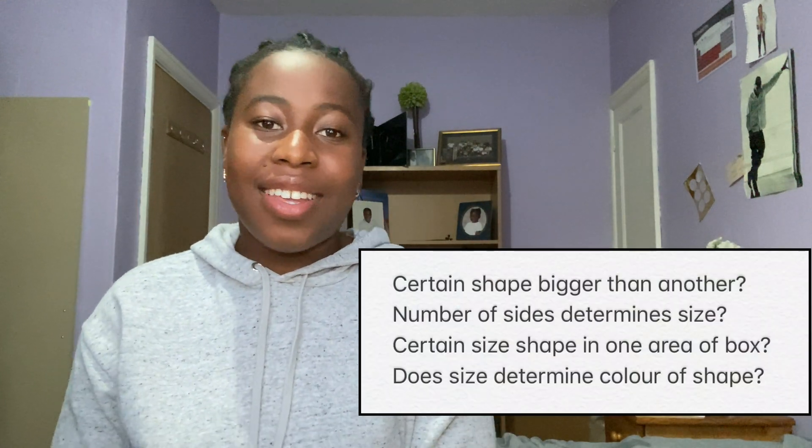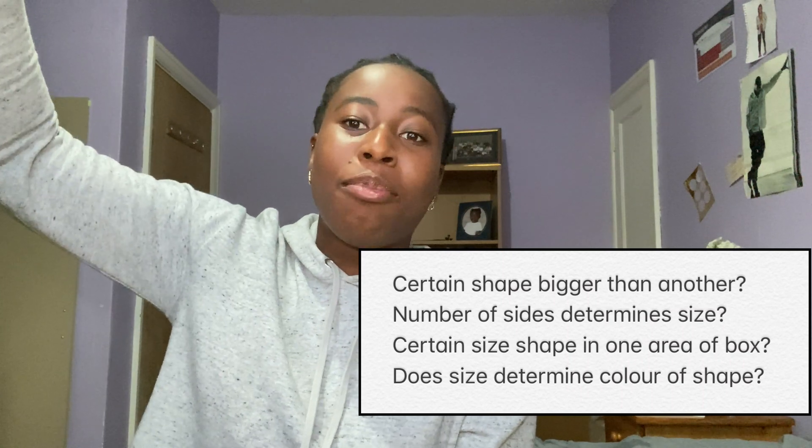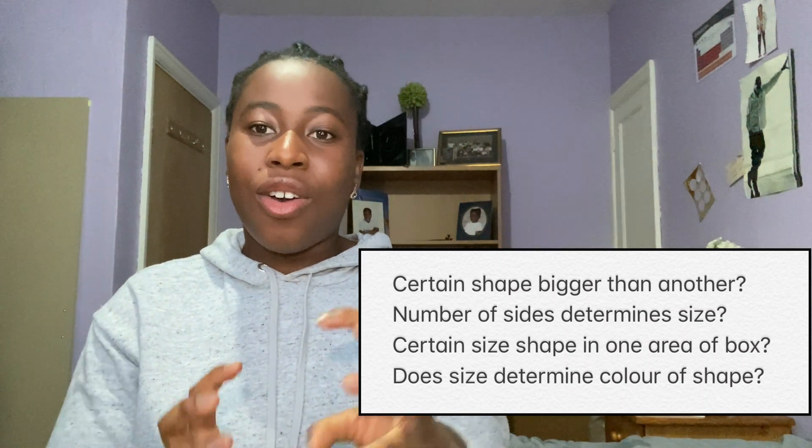S is for size. How big are the shapes? Is there a small shape of a certain color in that set? Is there a shape that's big in a certain corner of that box? Just look at how big a certain shape is or how big something is in relation to another. What I did was go through things in order — starting from shape and going downwards. If I didn't find a pattern in shape, I'd go down to number and so on. This made it so much more structured, and before I knew it, I was doing these things automatically whilst practicing without even looking at my mnemonic.